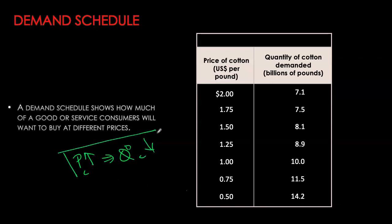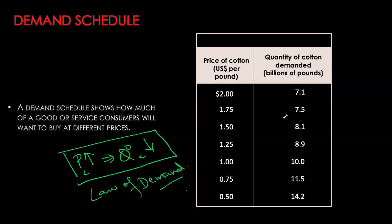This negative relationship between the two, holding everything else constant, is called the law of demand, and our data set giving us this information is referred to as the demand schedule.